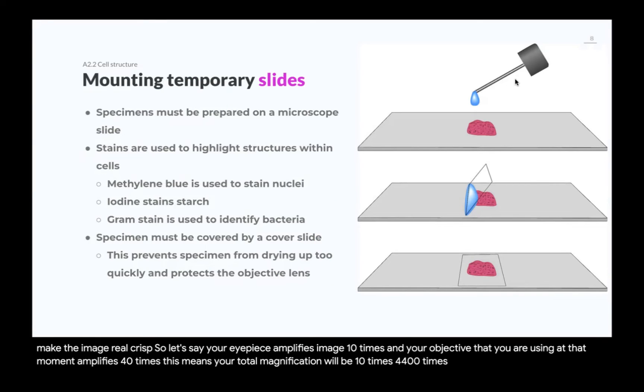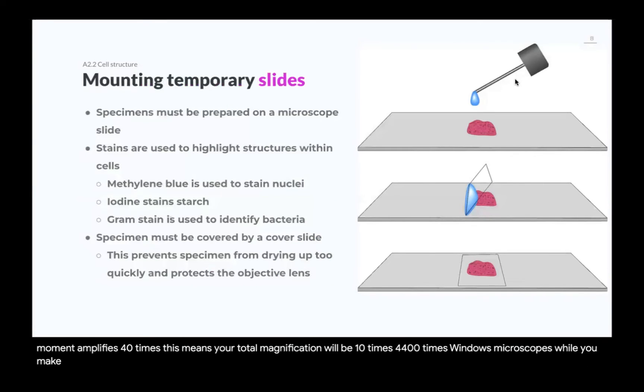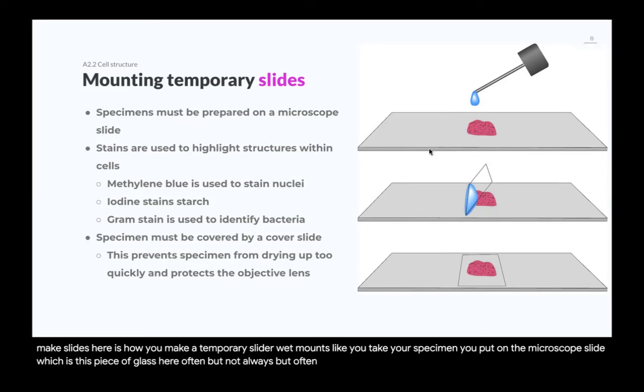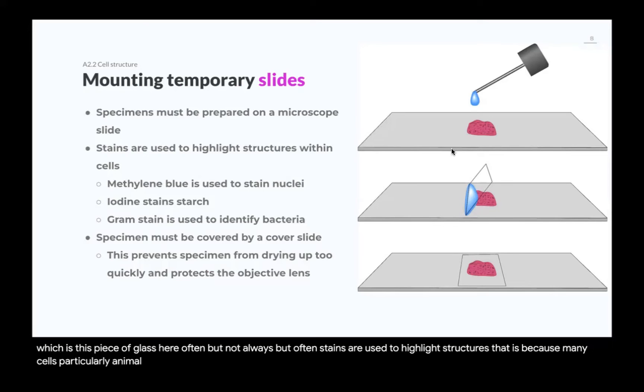What do we see in those microscopes? Well, you make slides. Here is how you make a temporary slide or wet mount slide. You take your specimen, you put on the microscope slide, which is this piece of glass here. Often, but not always, stains are used to highlight structures. That is because many cells, particularly animal cells, they are transparent. You cannot see them really well. You cannot identify structures without using stains.